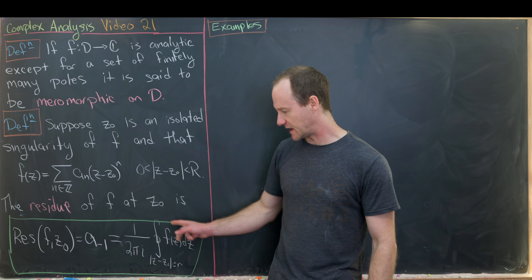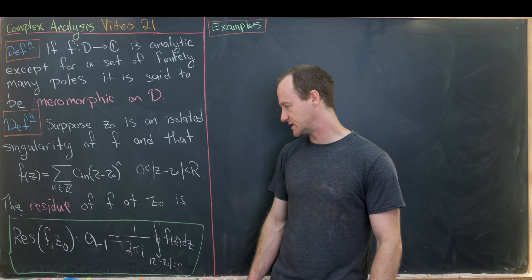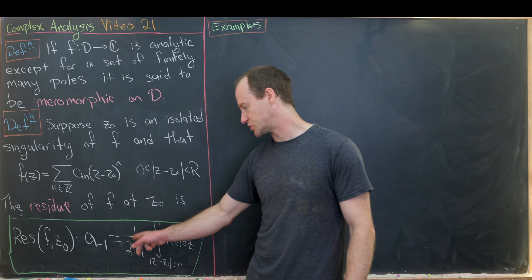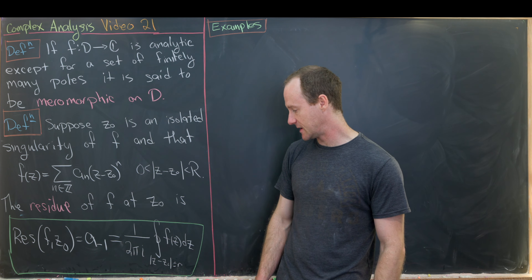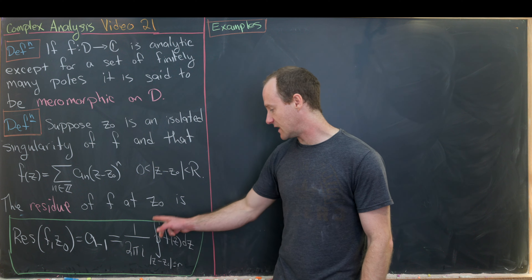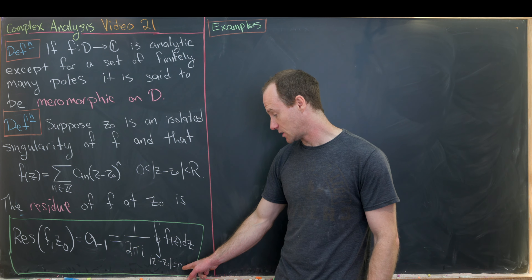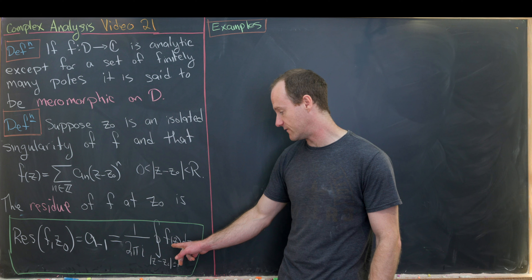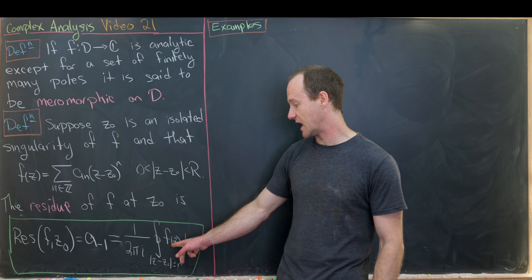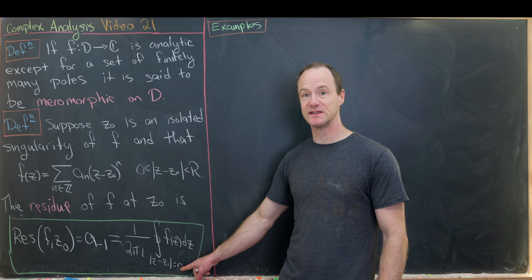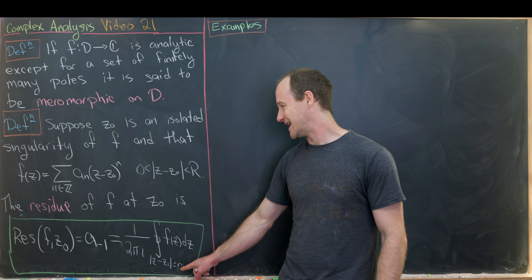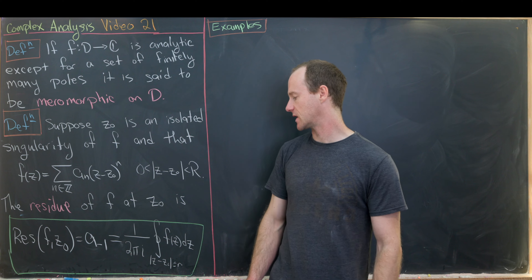Furthermore, by an integral formula from previous videos, that coefficient equals 1/(2πi) times the integral over the circle of radius r centered at z₀ of the function f, where r is any radius between zero and R — so you're in the region where the function is analytic.